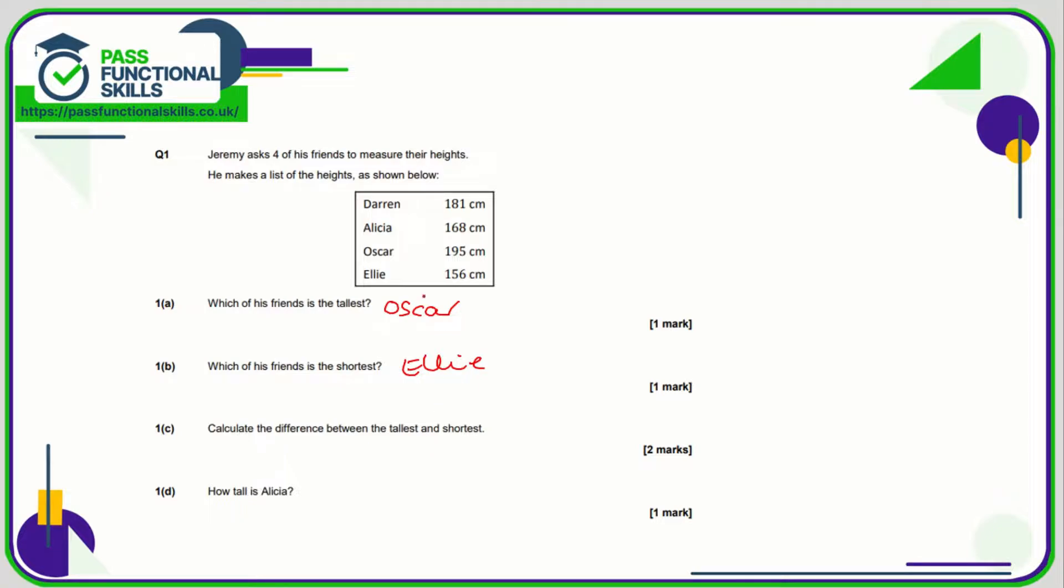So the difference between the tallest, which is Oscar, and Ellie, which is the shortest, is simply going to be 195 take away 156. Use a calculator if you're not confident, and that is a difference of 39 centimetres.